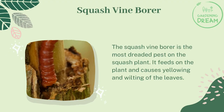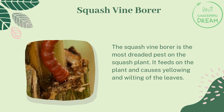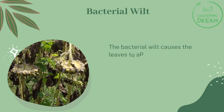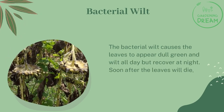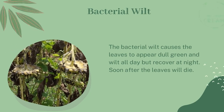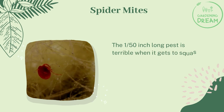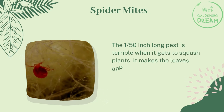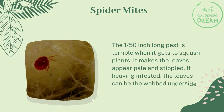Squash Vine Borer: The squash vine borer is the most dreaded pest on the squash plant. It feeds on the plant and causes yellowing and wilting of the leaves. Bacterial Wilt: The bacterial wilt causes the leaves to appear dull green and wilt all day but recover at night. Soon after, the leaves will die. Spider Mites: The 1/50th-inch-long pest is terrible when it gets to squash plants. It makes the leaves appear pale and stippled. If heavily infested, the leaves can have a webbed underside.